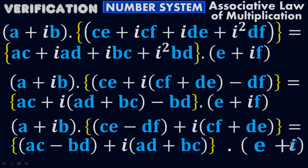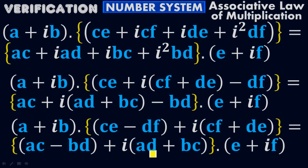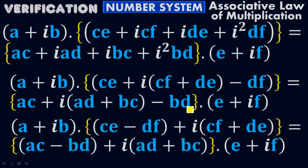This equals (A + iB)(CE − DF + i(CF + DE)) = (AC − BD + i(AD + BC))(E + iF). We have CE and −DF as terms without iota, so bring them together as CE − DF. Similarly AC and −BD have no iota, so bring them as AC − BD. Then take iota common from the remaining terms.